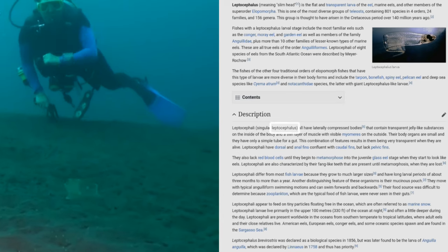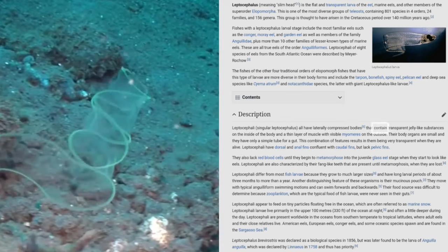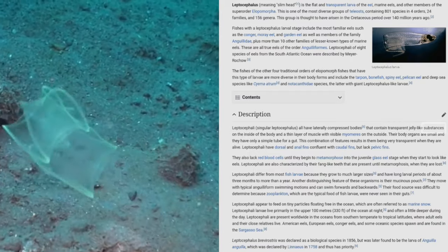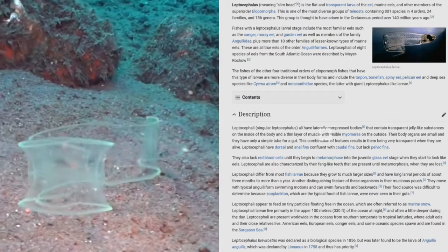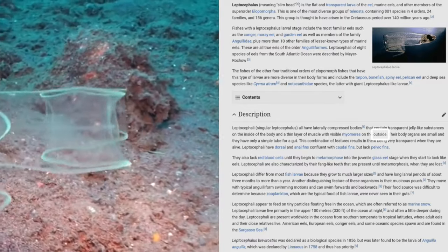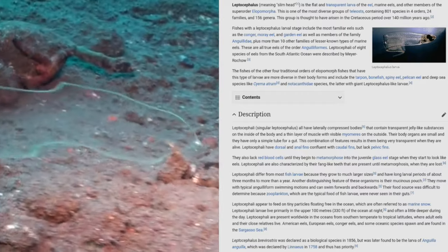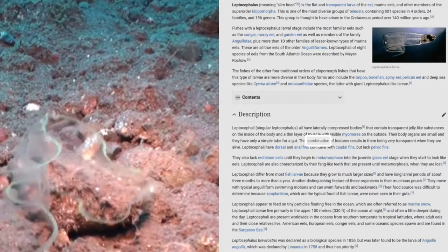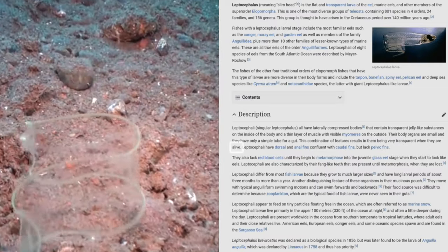Leptocephali all have laterally compressed bodies that contain transparent jelly-like substances on the inside of the body and a thin layer of muscle with visible myomeres on the outside. Their body organs are small and they have only a simple tube for a gut. This combination of features results in them being very transparent when they are alive.